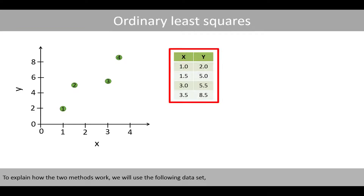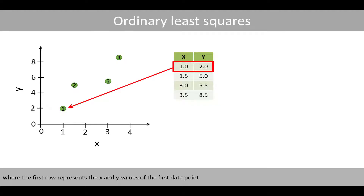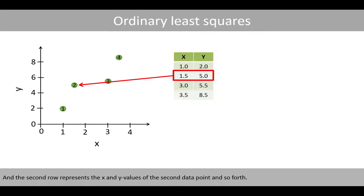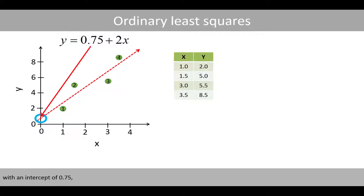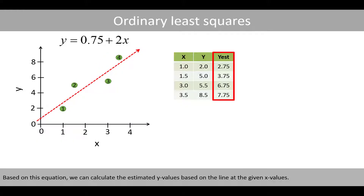To explain how the two methods work, we'll use the following dataset. The first row represents the x and y values of the first data point, and the second row represents the x and y values of the second data point, and so forth. Let's fit an arbitrary line to the data. Based on this equation, we can calculate the estimated y values based on the line at the given x values.